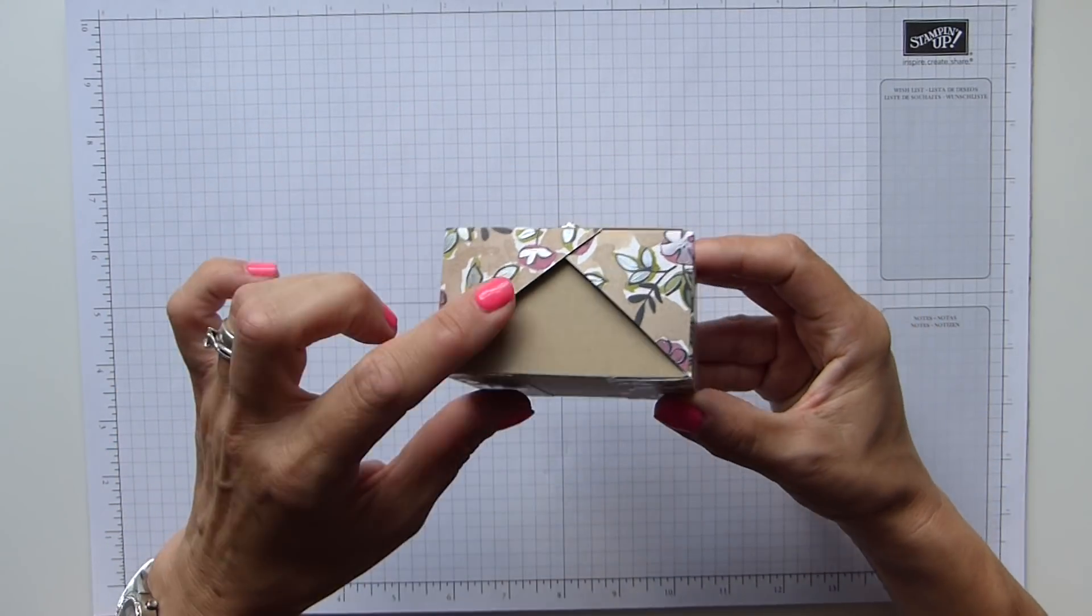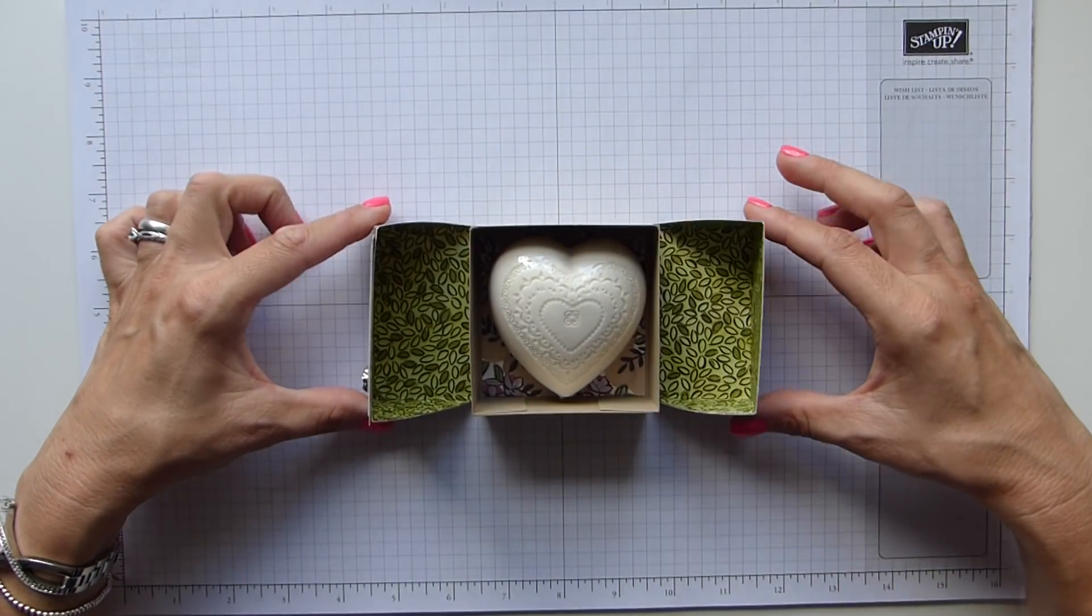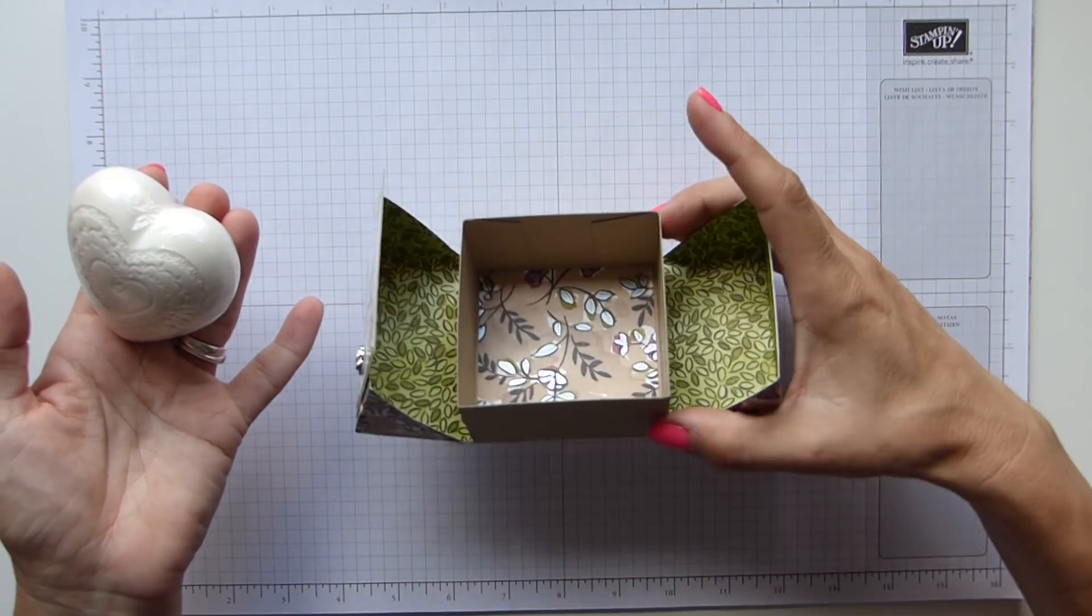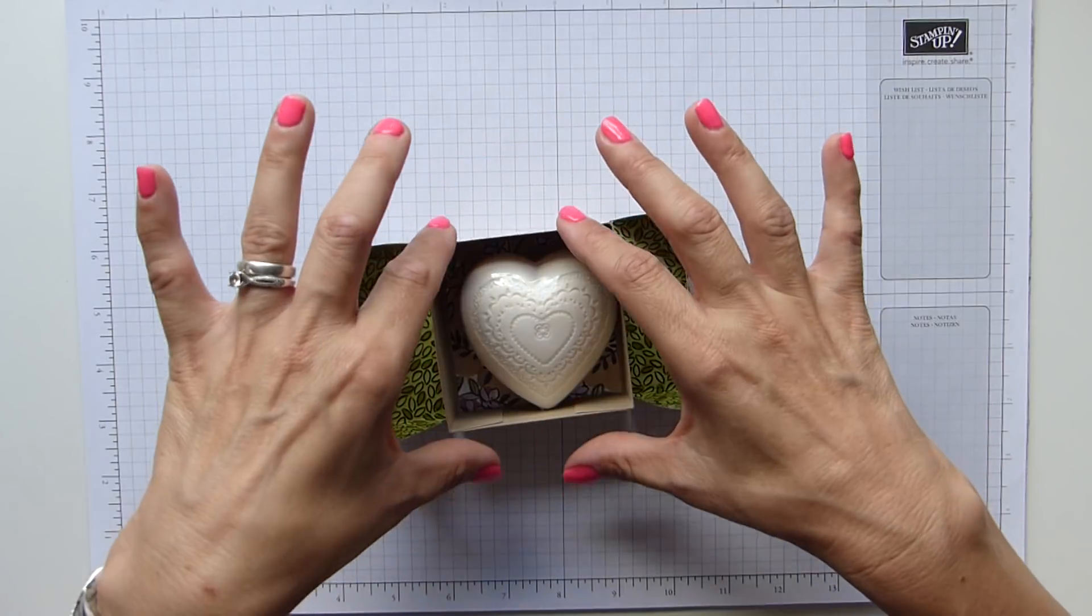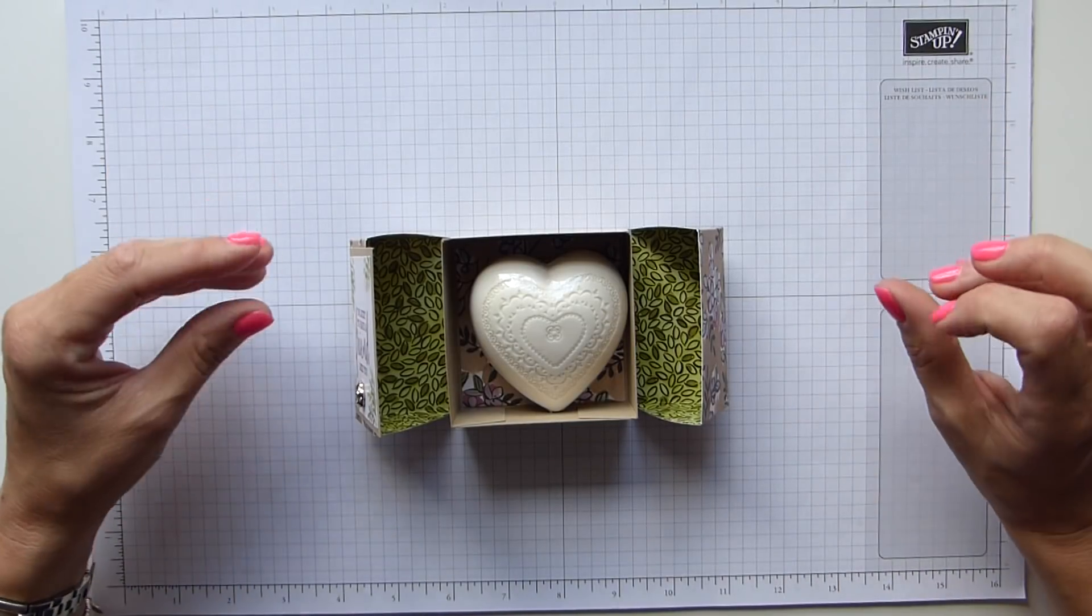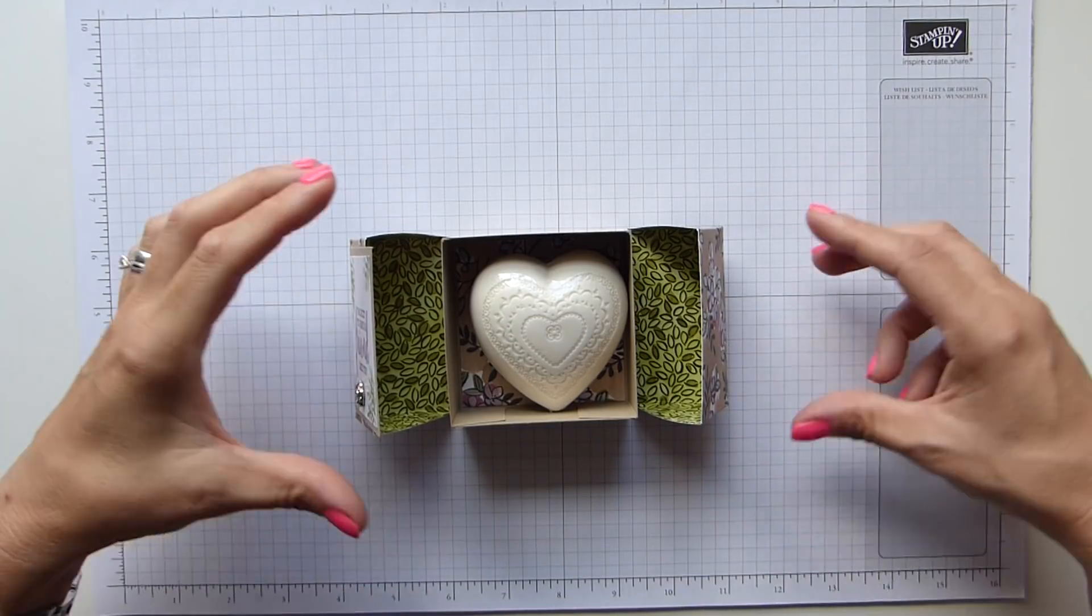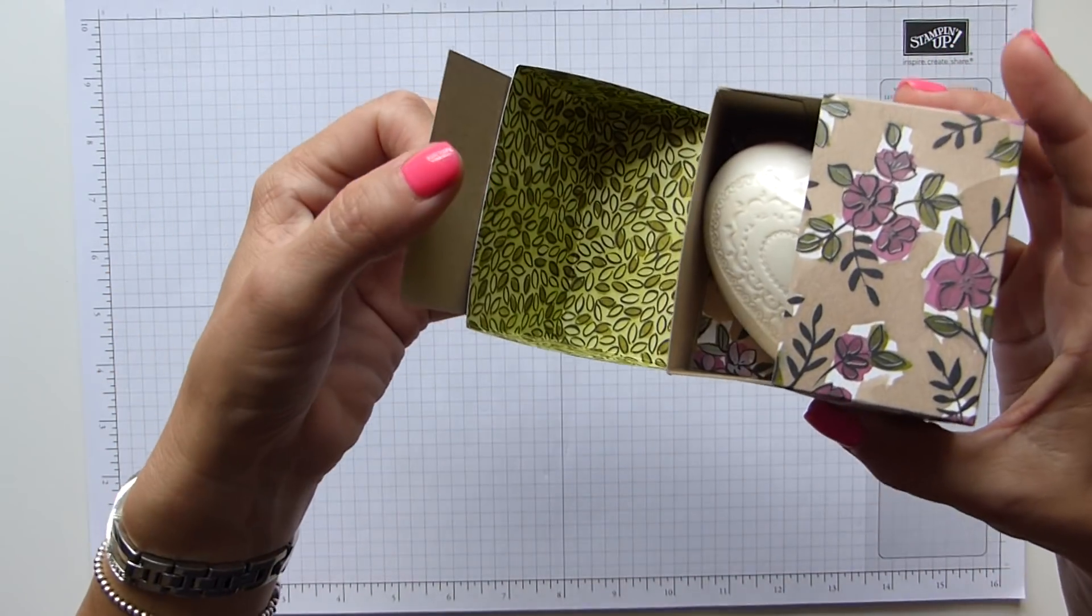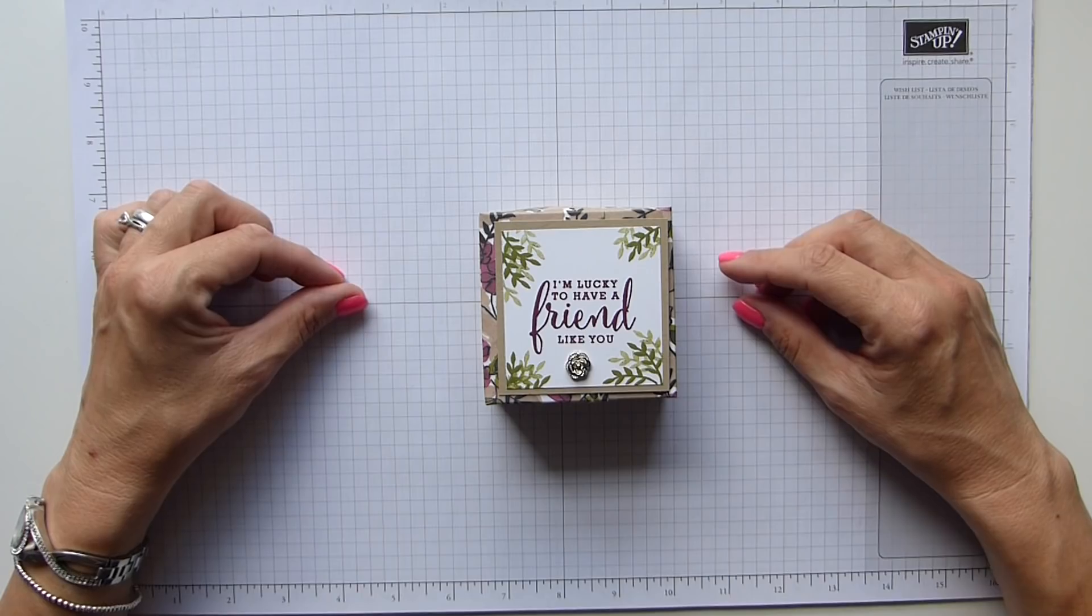As you can see, it's quite a cute little box, lovely little detail there on the side. And it opens up just like that. And then I've put a lovely soap inside here. I've just put a piece of DSP just in the bottom of the box there, just to make it a little bit more prettier. And then obviously we just have one lid folds over there.